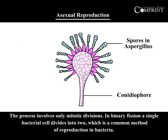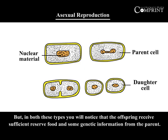The process involves only mitotic divisions. In binary fission, a single bacterial cell divides, which is a common method of reproduction in bacteria. In both these types, the offspring receives sufficient reserve food and the same genetic information from the parent.